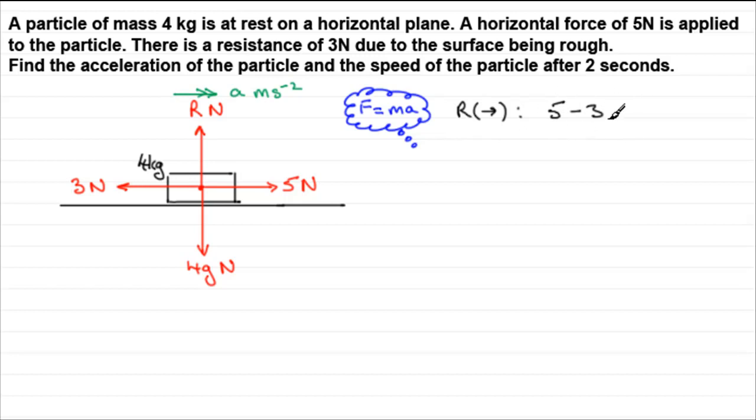This is the resultant forward force, that's the F part. And it equals the mass times acceleration. The mass is 4 kg. And we've got the acceleration a, which we're trying to work out. So this is a simple equation. 5 take 3 gives us 2, and 2 equals 4a. So if we divide both sides by 4, we get a equals 2 over 4, 2 quarters or a half a meter per second per second.